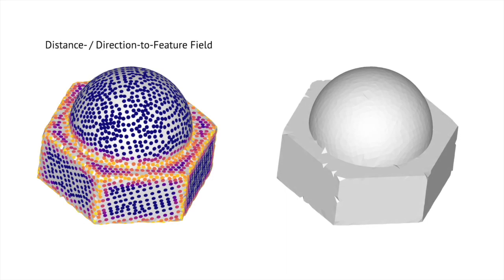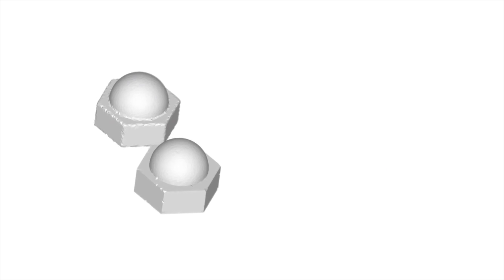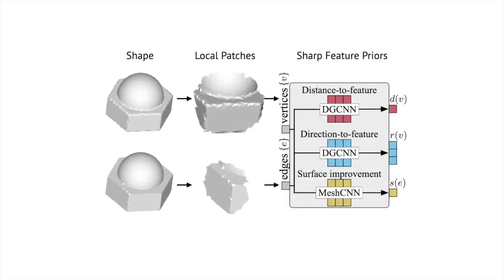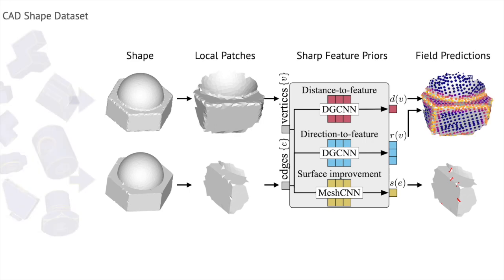To achieve our goal, we develop a set of surface-based fields: a vertex-wise implicit field for sharp geometric features, and an edgewise field identifying problematic edges. These fields are defined on local mesh patches and learn to form Sharp Feature Priors using a large annotated CAD dataset.